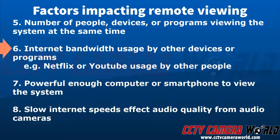Sixth is the internet bandwidth usage by other programs or devices on the same network. If you have other programs that reach out to the internet for downloads or uploads, this will also affect your internet speed. For example, if you have people watching Netflix or YouTube, the download usage of those services is actually very high and can definitely affect the remote viewing of your system.